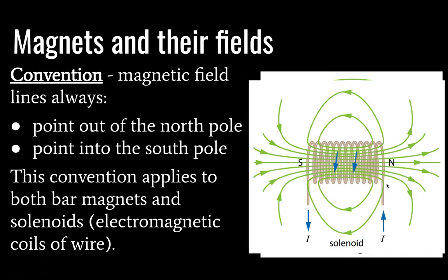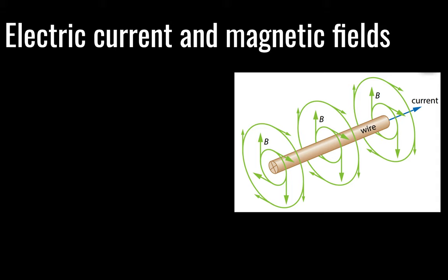And solenoids are electromagnetic coils of wire, and they look like this. So if you run a current through a coil of wire, what will happen is that that coil of wire begins to behave very similarly to a bar magnet. And you get a magnetic field that has a very similar shape to a bar magnet.